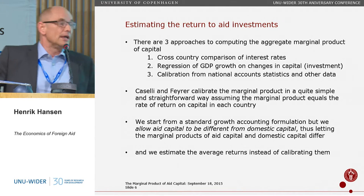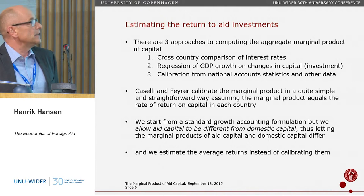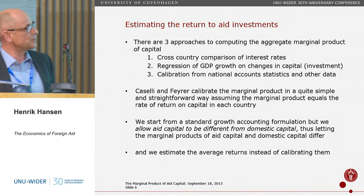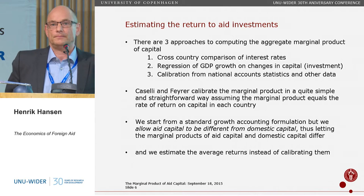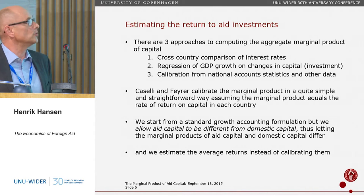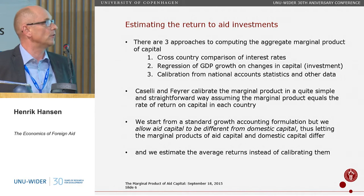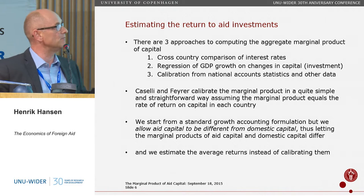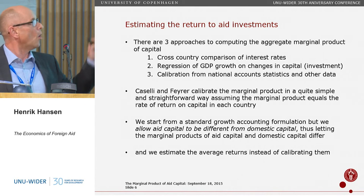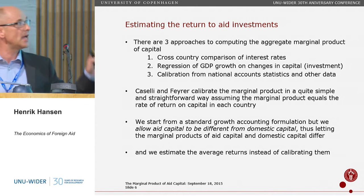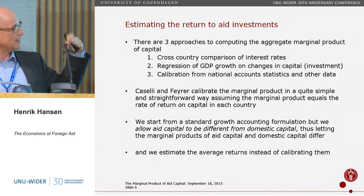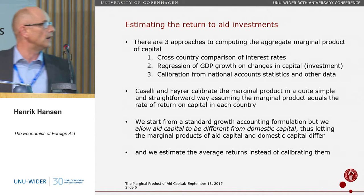There are three approaches to computing aggregate marginal products of capital. One is to look at interest rates, though this is hampered by market restrictions. You can also do regression analysis of GDP growth on changes in capital — more or less investment — in a growth accounting formulation. Or you can calibrate based on national accounts statistics and other data. Caselli and Fyre use the third method, calibration, which is why they have country-by-country observations.